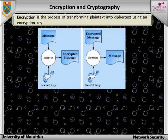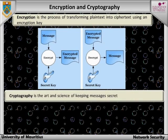An encryption algorithm and all its possible keys, plain texts, and ciphertexts is known as a cryptosystem, or cryptographic system. Cryptography is the general name given to the art and science of keeping messages secret. It is not the purpose here to examine in detail any of the mathematical algorithms that are used in the cryptographic process, but instead to provide a general overview of the process and its uses.